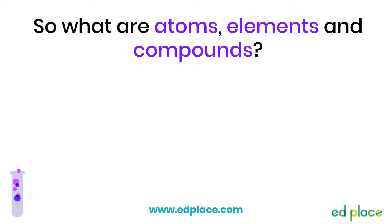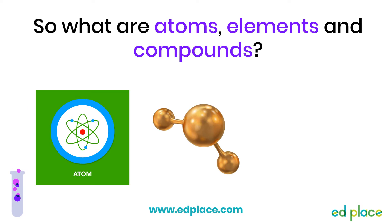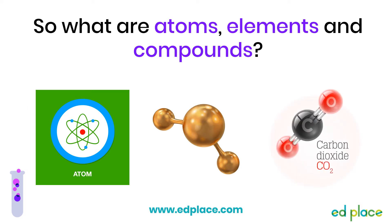Let's check we understand what we mean by the words atom, element and compound. Atoms are the basic building blocks of all matter on Earth, and they're very tiny — far too small to be seen with the naked eye. Substances can be categorised as either elements or compounds. Both are made up of atoms. The only difference is an element is made up of one type of atom, whereas compounds are made up of two or more different types of atom. Let's take a closer look at these one by one.